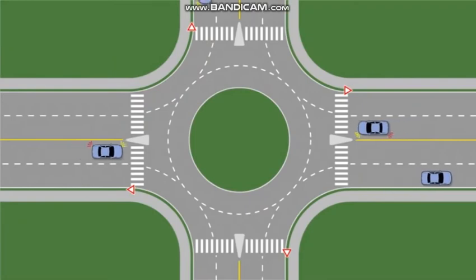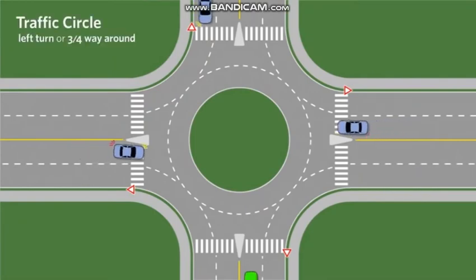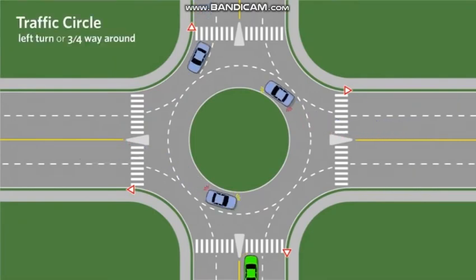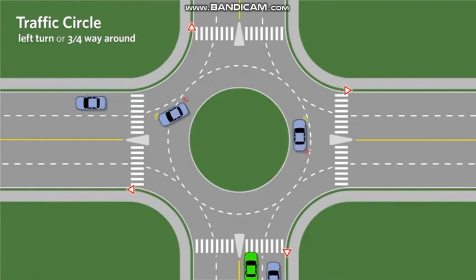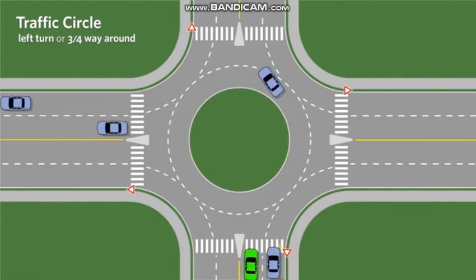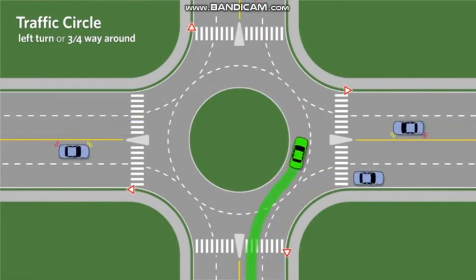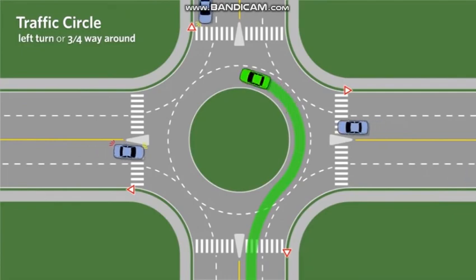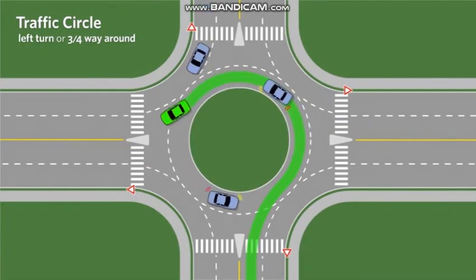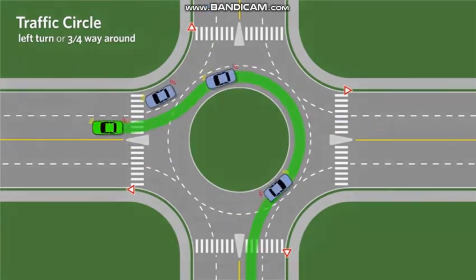For a three-quarter of the way around, the correct approach is to enter from the left or inside lane. Signal left, yield to pedestrians and traffic in the circle, and then proceed when safe. Exit by signalling right and staying in the left or inside lane.